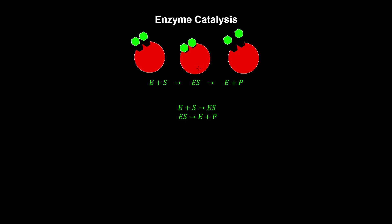Some catalysts increase the rate of a reaction by binding to the reactants. Enzyme catalysis is a prime example, and it's a homogeneous catalysis process because the enzyme functions in the same phase as the reactants. The reactants are called the substrate in a biological process.